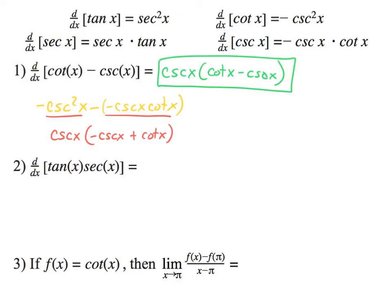So now we're going to do a product rule here. For product rule, we are going to take the derivative of tangent, which is secant squared x, then we leave the secant x. Then we put a plus. Then we leave the tangent x, and then we take the derivative of secant, which is secant x tangent x.